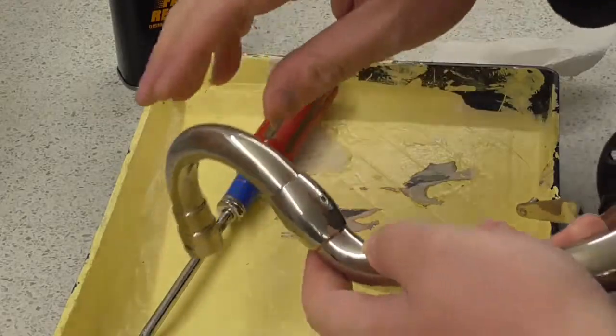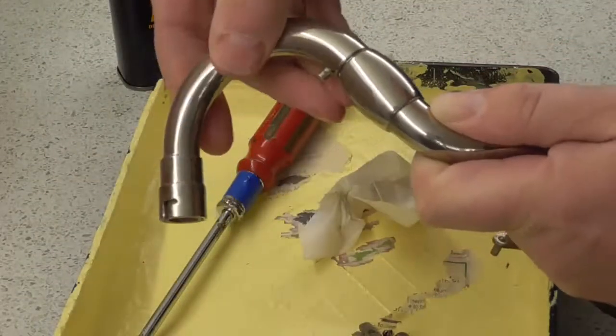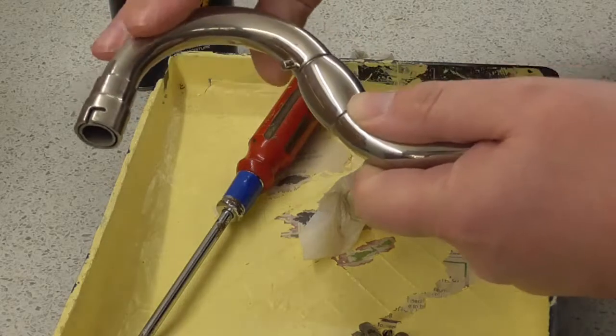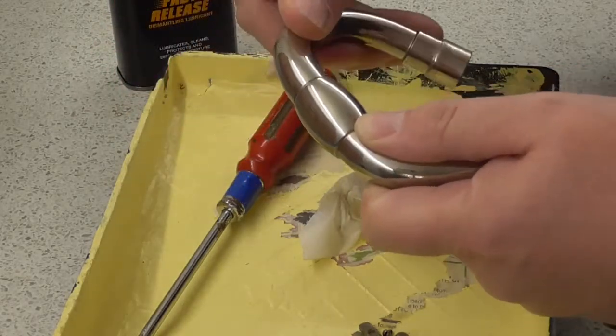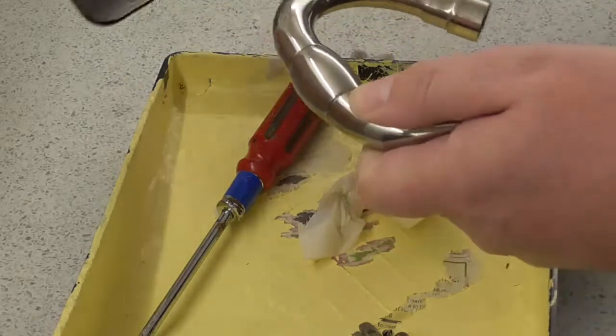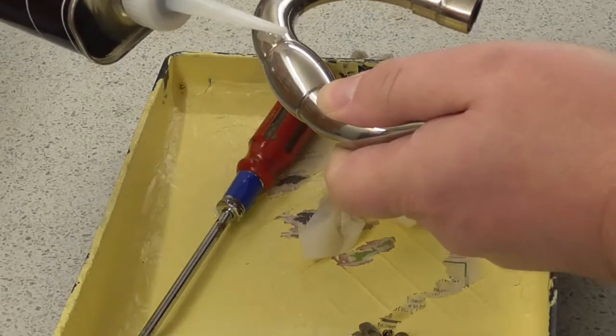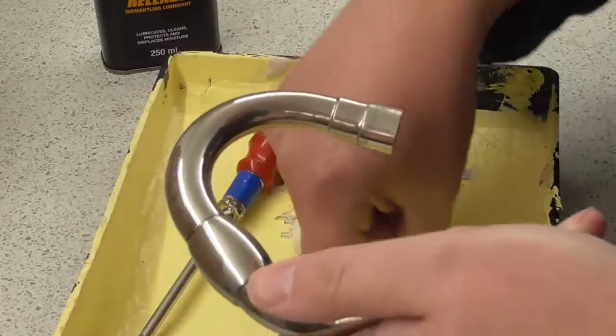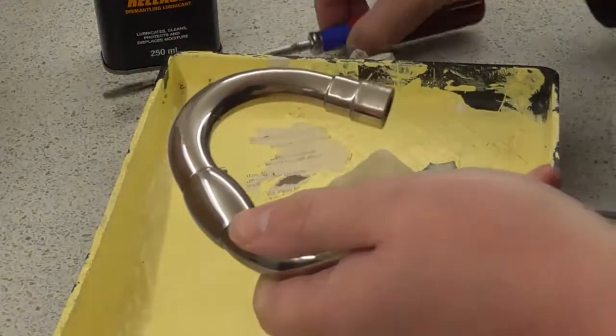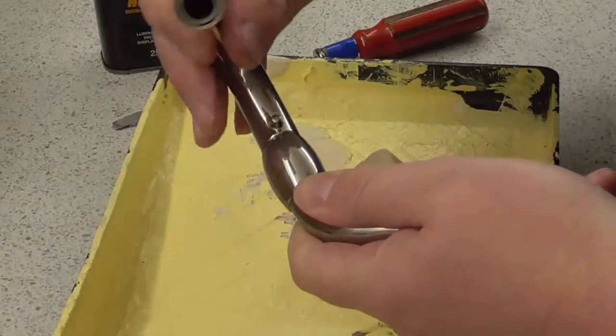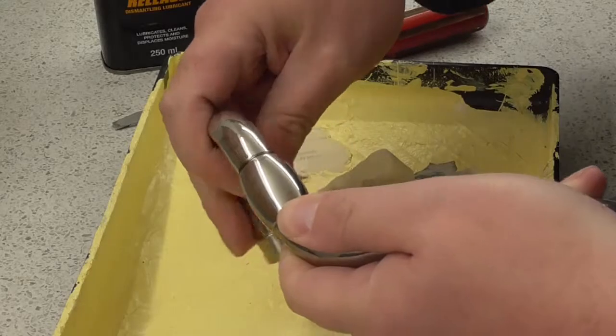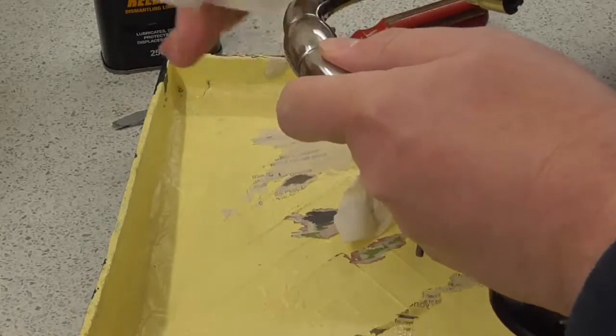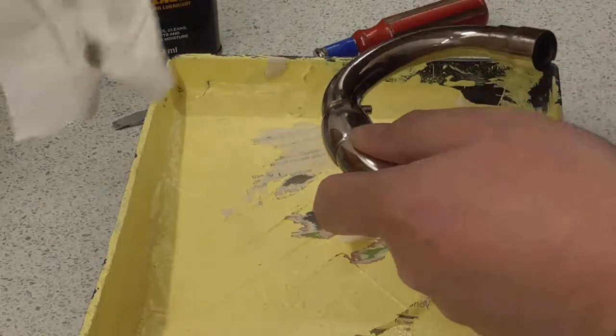There we go, that's off. So there's a possibility that there might be some nasty ball bearing mechanism in here ready to ping out and just generally make my day very sad. But what I'm going to do is just put a bit more Plus Gas in there. I've got this old paint tray here just really to try and catch anything that might drop out. But yes, that's definitely unscrewing.